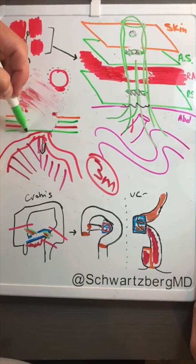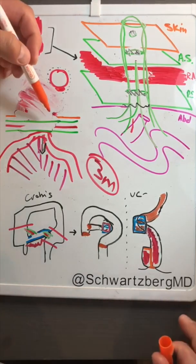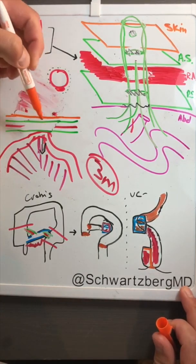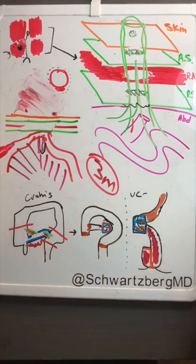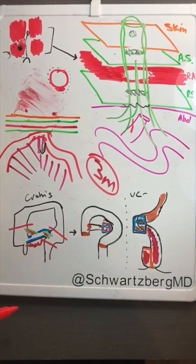And all these layers are re-approximated. That is how you create a diverting loop ileostomy, and that is how you reverse a diverting loop ileostomy and the reasons you do it. Thank you.